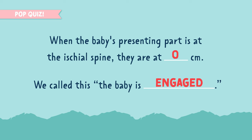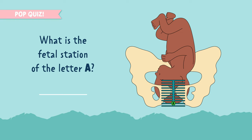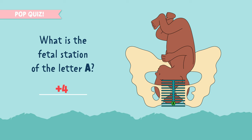What is the fetal station of the letter A? First thing you need to do is find your ischial spine and count. So it's plus one, plus two, plus three, and plus four below the ischial spine, which makes it positive four. This means the presenting part is four centimeters below the ischial spine.